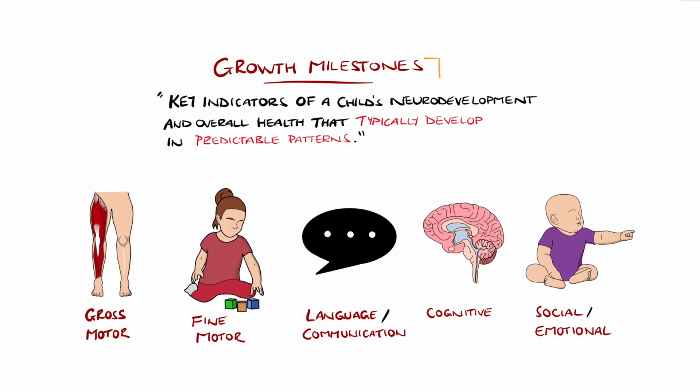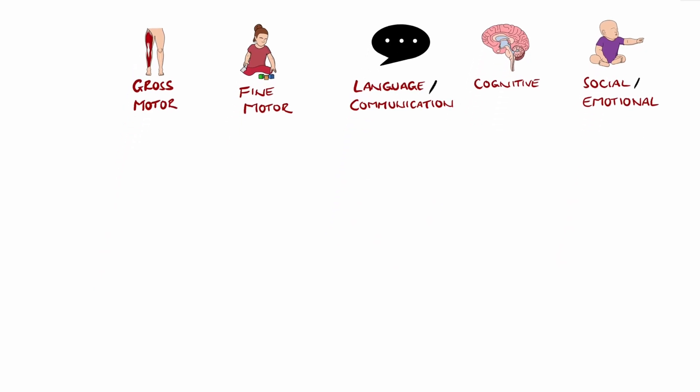and the fifth is social or emotional, which includes interaction and emotional regulation. Growth milestones assess a child's ability to perform tasks expected at their age, and tracking these milestones helps identify developmental delays or disorders early.